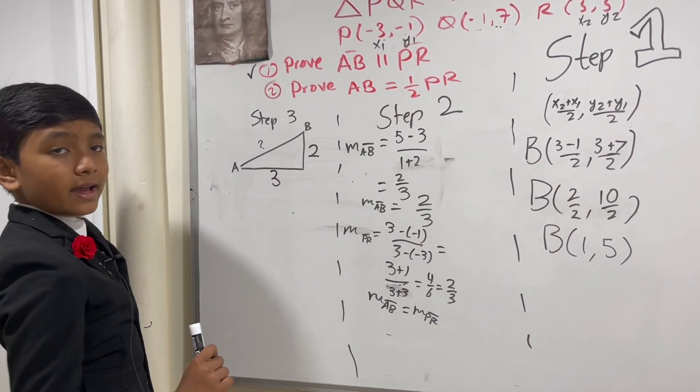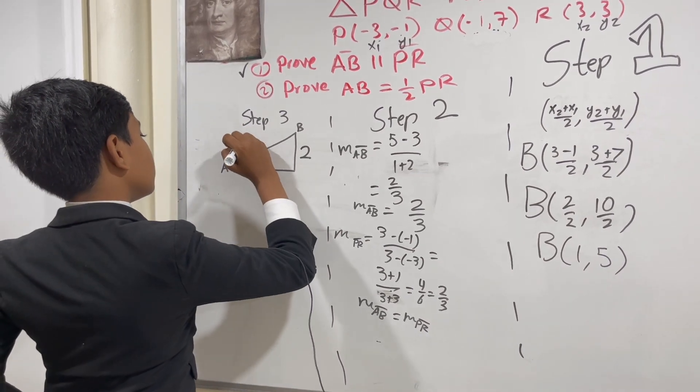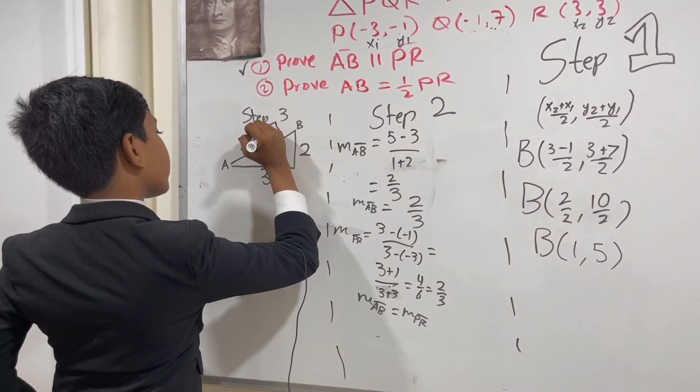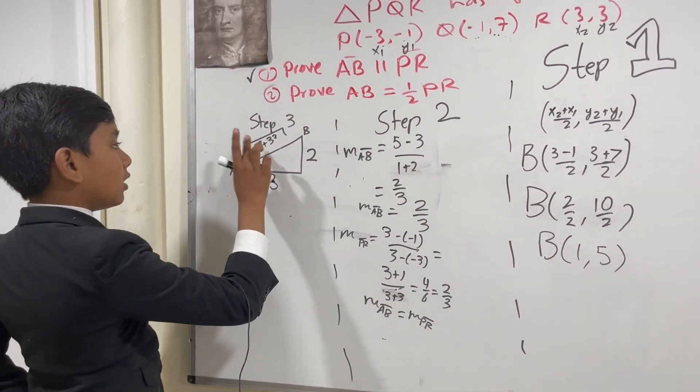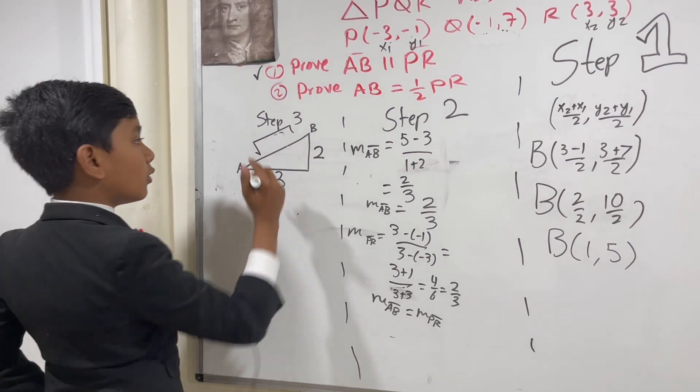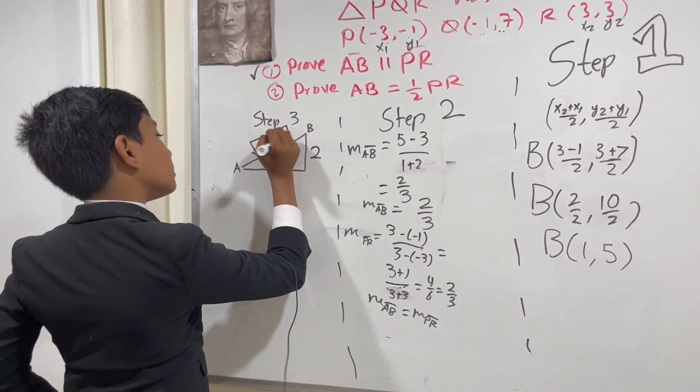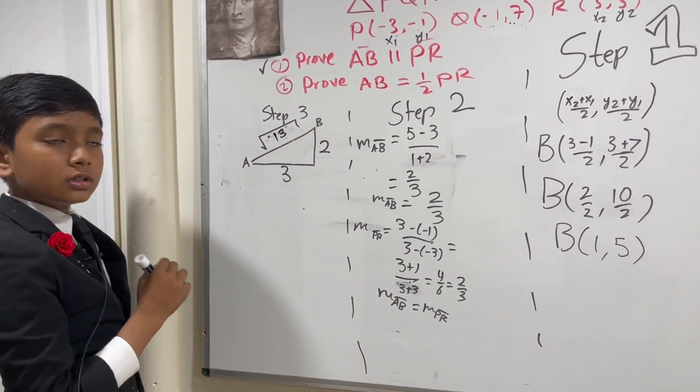So now, this, according to the Pythagorean theorem, must be equal to the square root of 2 squared plus 3 squared. 2 squared is 4, and 3 squared is 9. Adding them together yields 13. So the distance AB is the square root of 13.